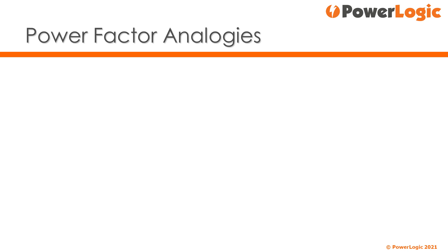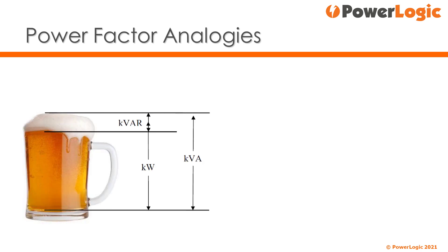There are two main analogies that get used for power factor. The first is the beer analogy on the left, where a large beer is ordered to quench the thirst of a thirsty individual.